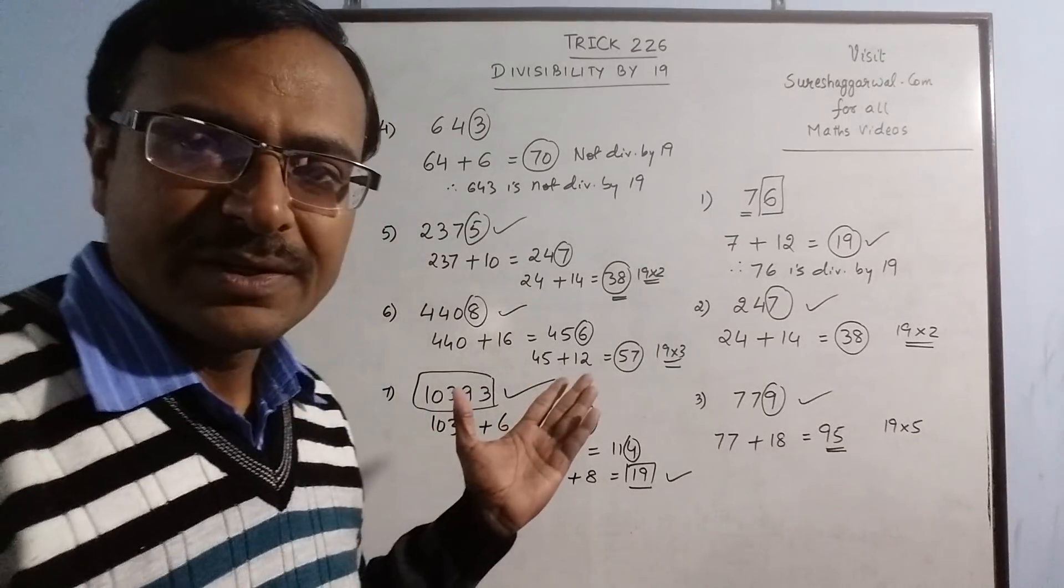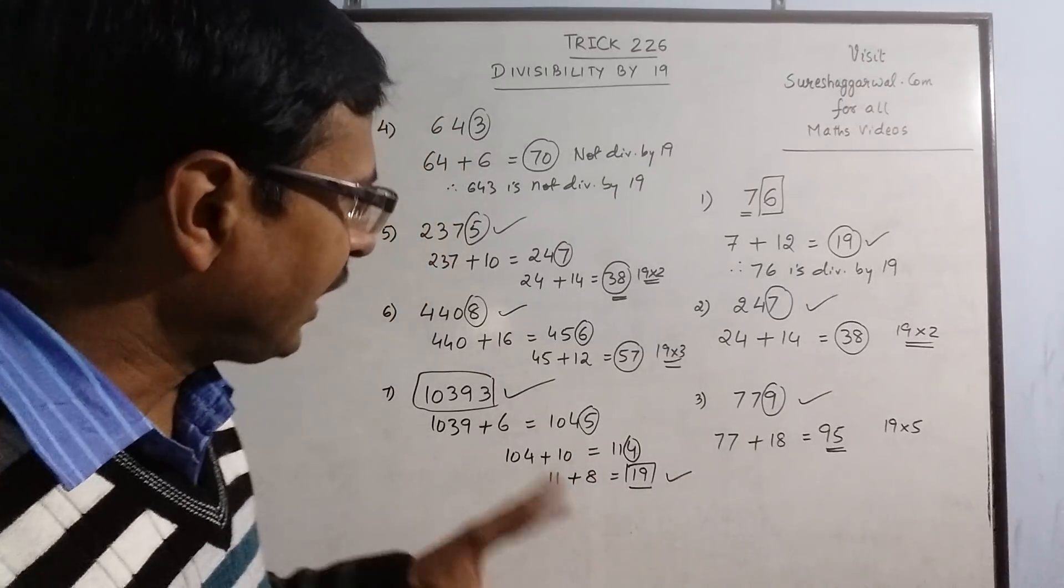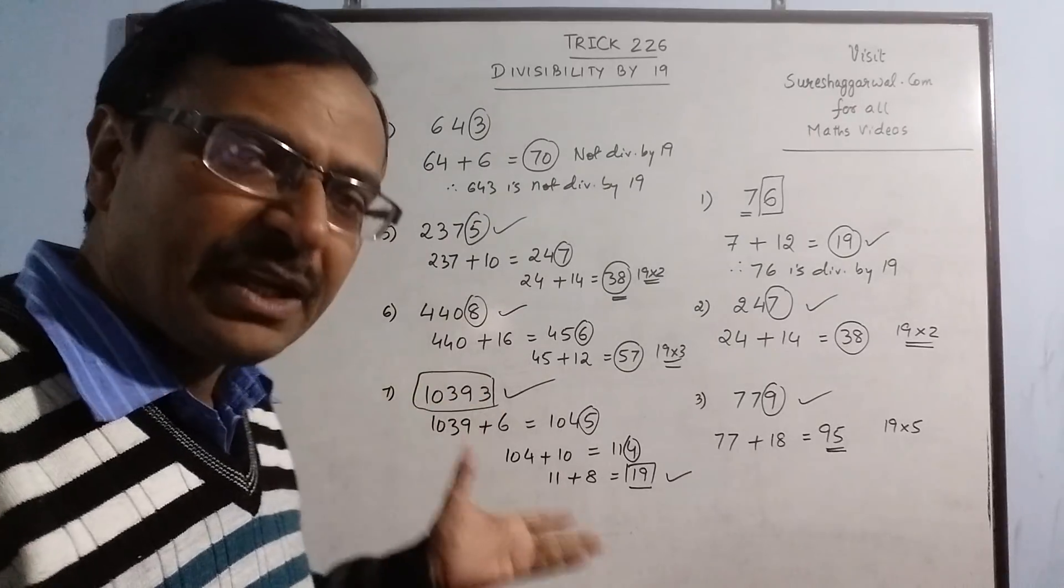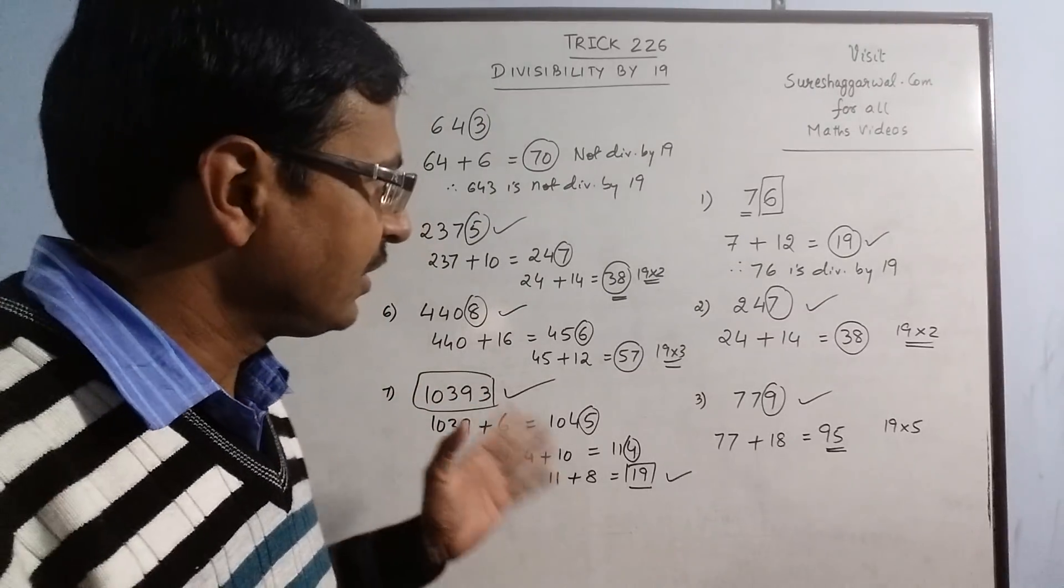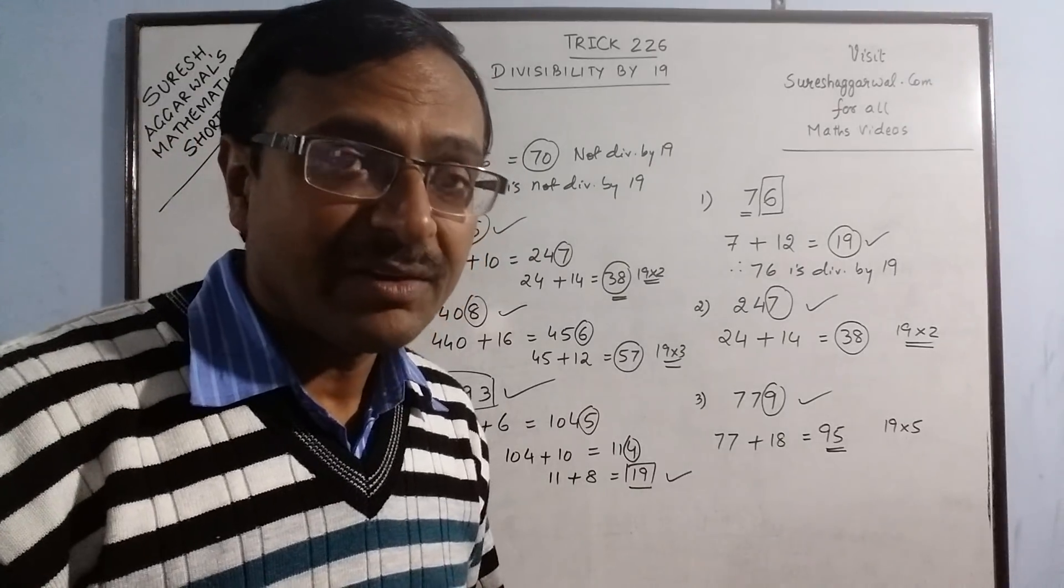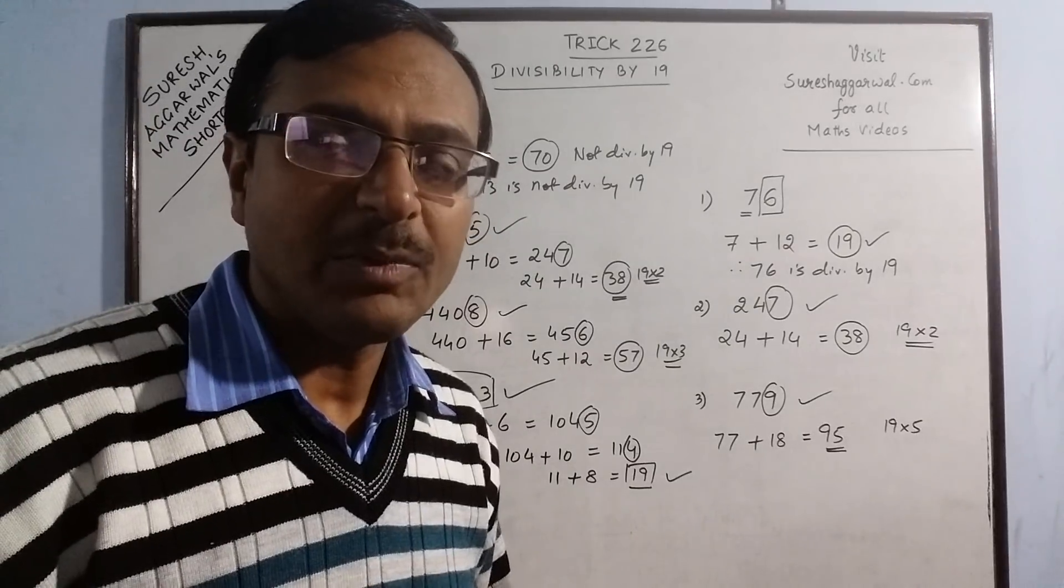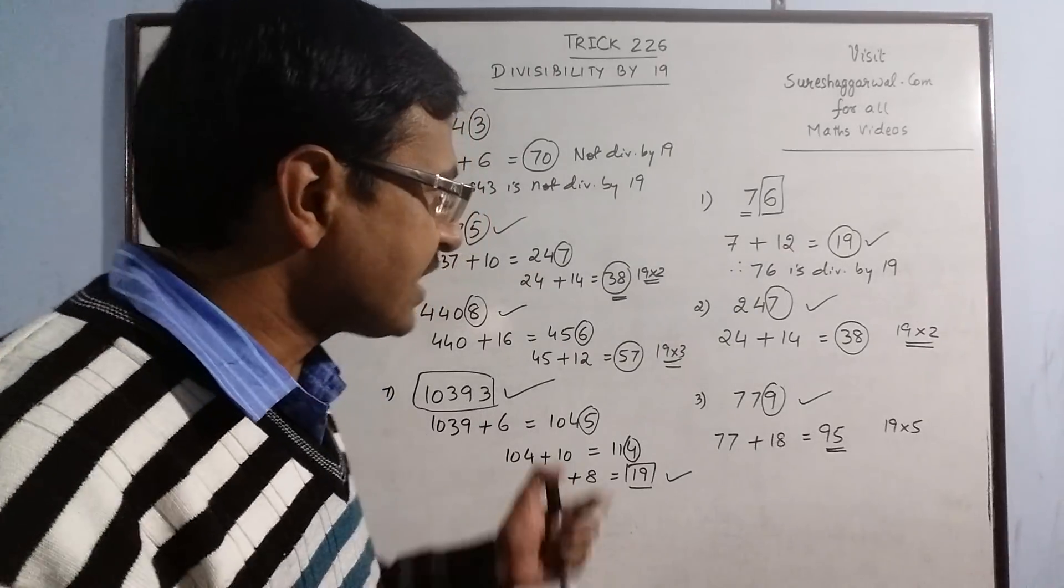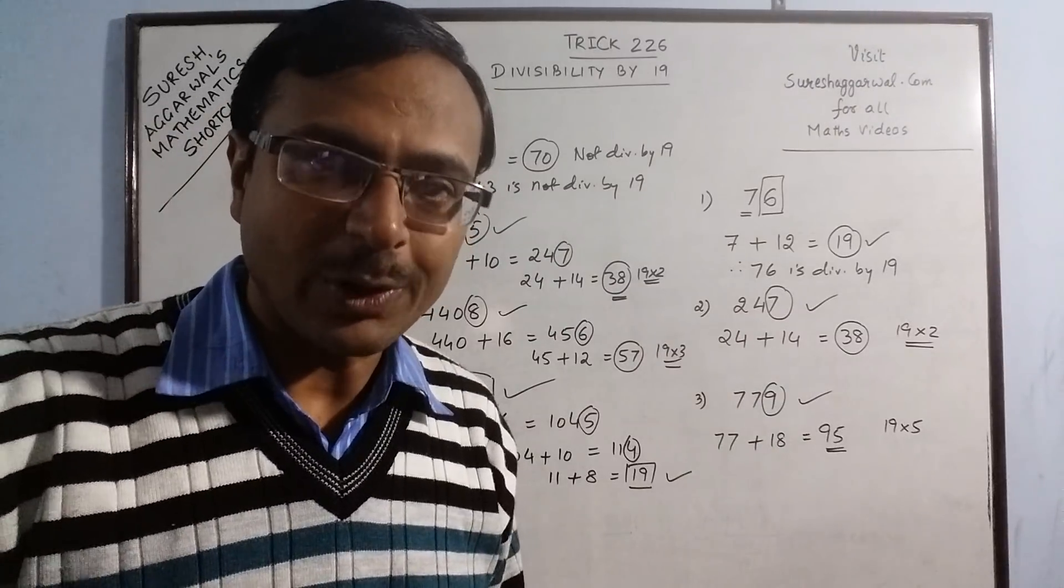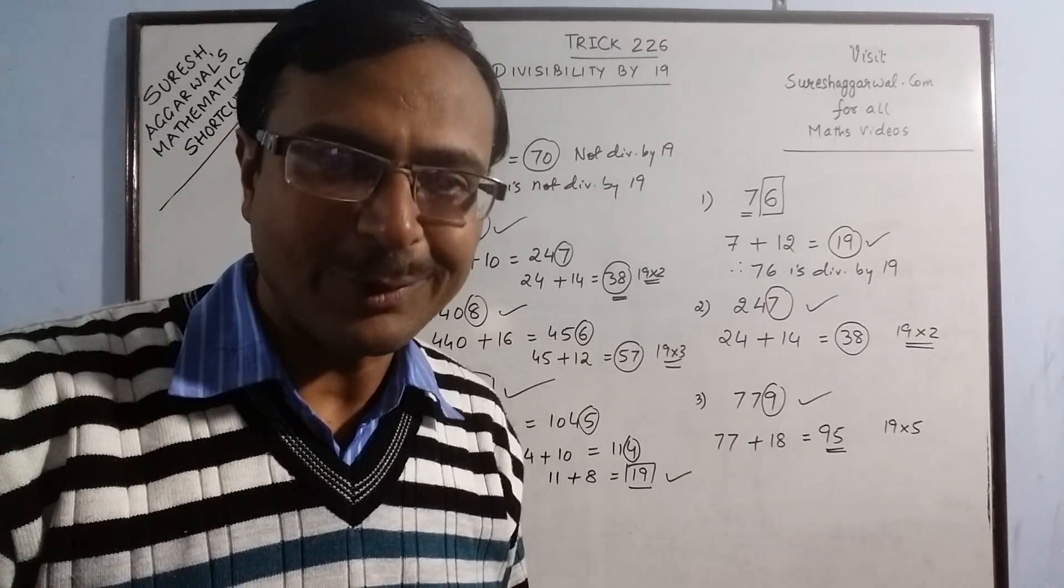So you see, just in 3-4 minutes, we can check divisibility by 19. And in turn, for a number containing any number of digits, you can check this divisibility by 19. This will help you in making factors of numbers which are divisible by 19, because by just having a look at the number, it is difficult to tell whether it is divisible or not. So keep learning and keep sharing the videos. Subscribe the channel if you like it.